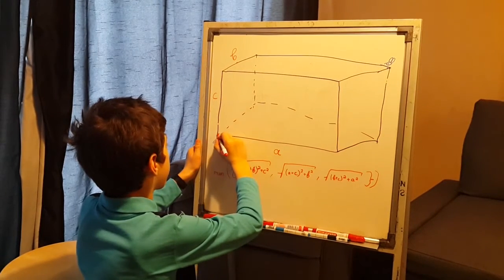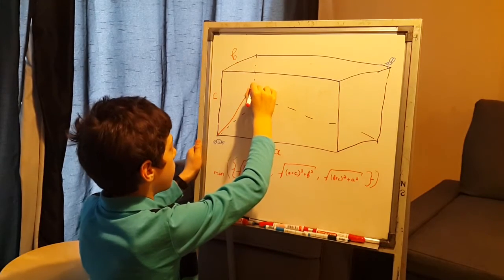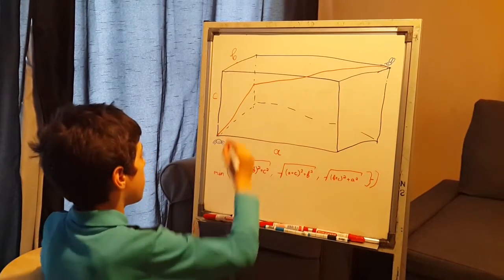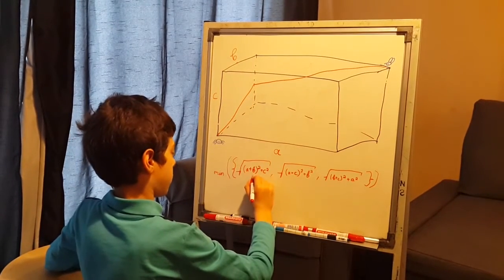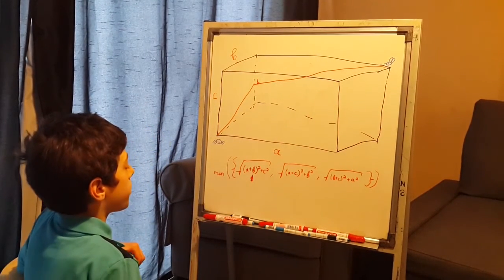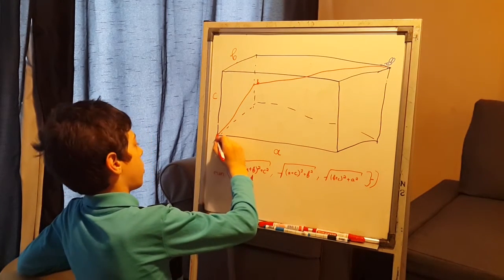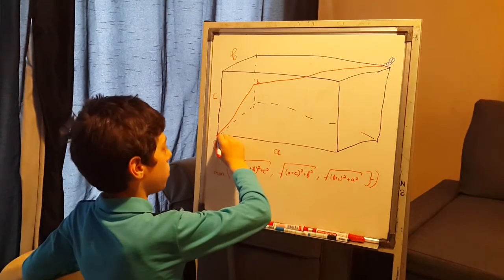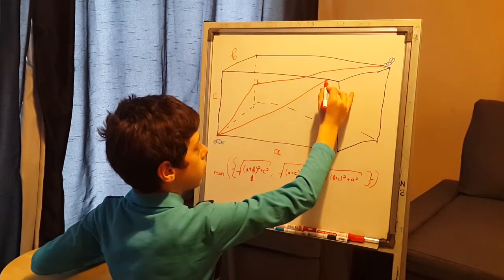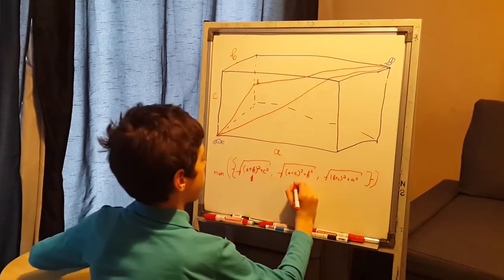Now let's see what the paths actually look like on the drawing. So one of the paths: the spider goes along the left wall and then along the back wall to the corner. That is path number one. Path number two: the spider crawls along the front wall, the closest one to us, and then along the ceiling.